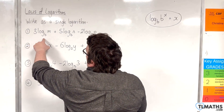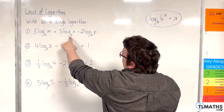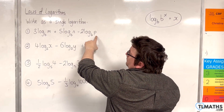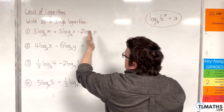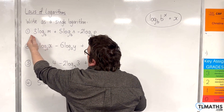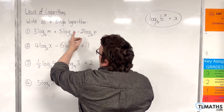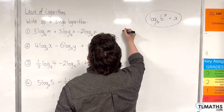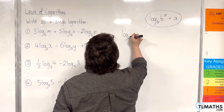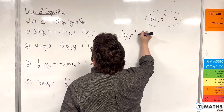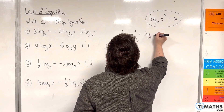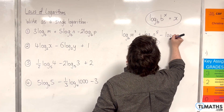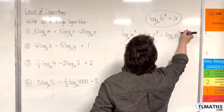We have 3·log base b of m, plus 5·log base b of n, take away 2·log base b of p. The first thing to do is deal with the values that are outside of the logarithms and bring them up to the powers. So I'm going to write that as log base b of m cubed, plus log base b of n to the 5, take away log base b of p squared.